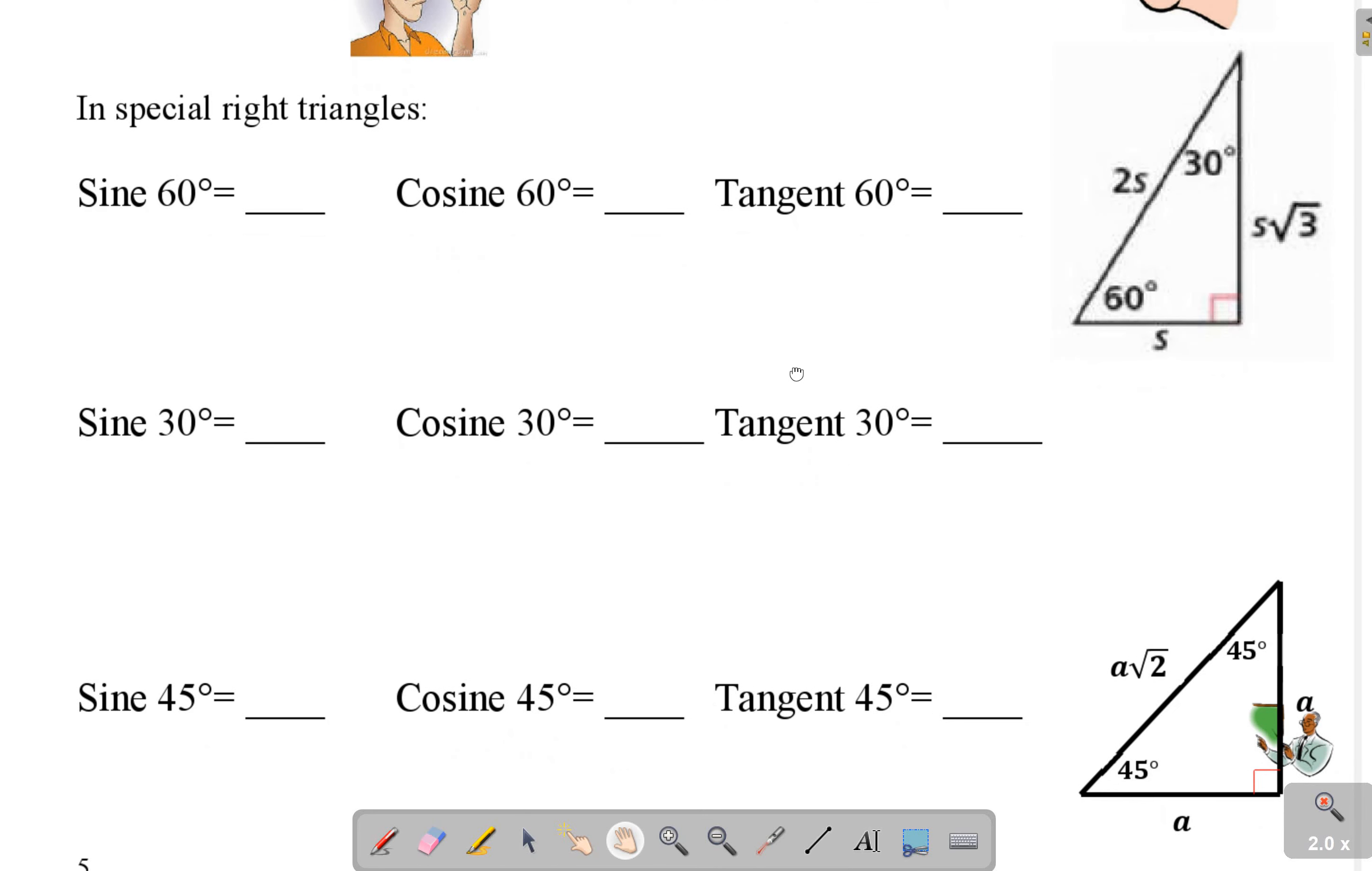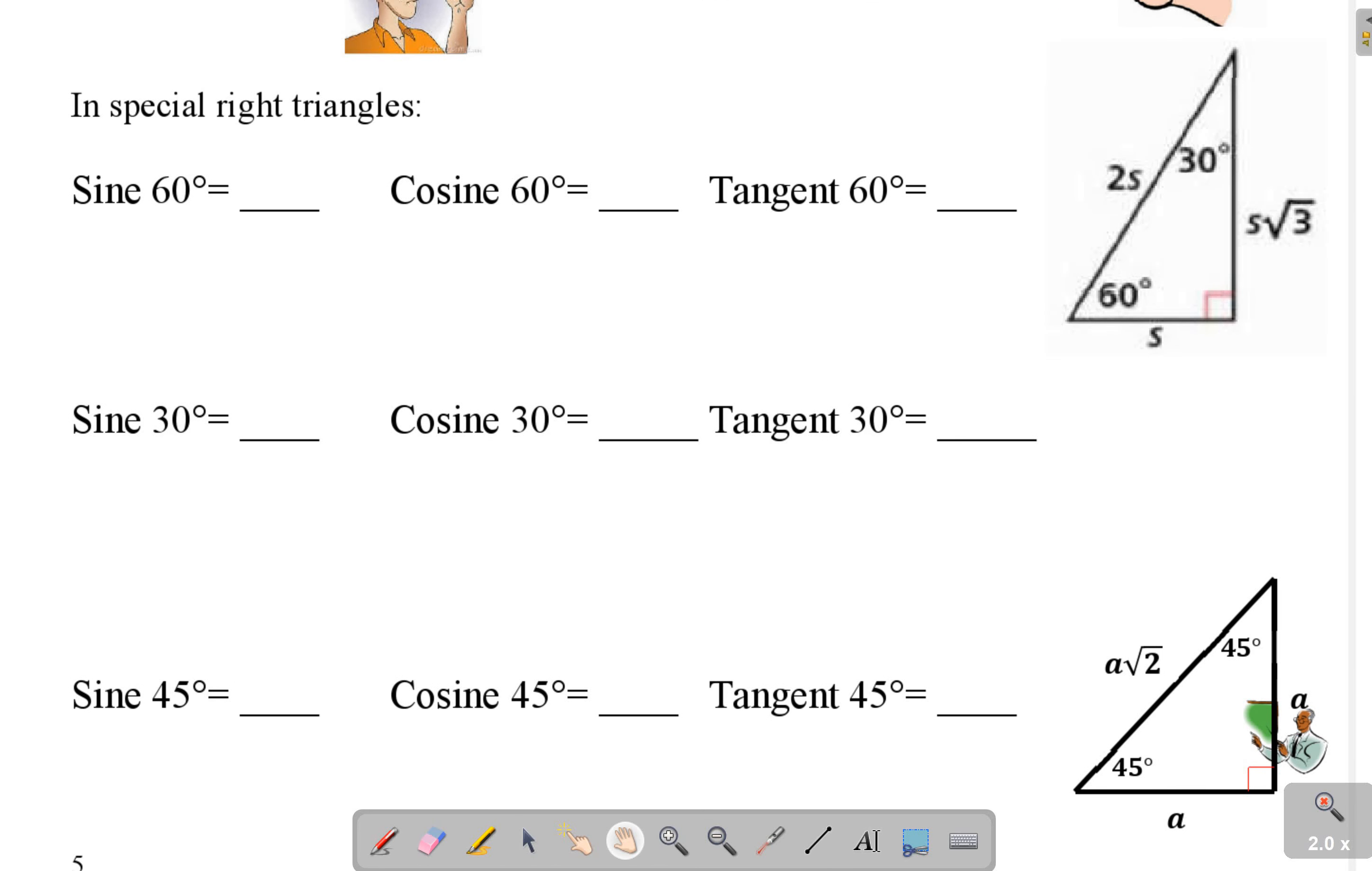Now first we're going to apply this to our special right triangles. Here we have a 30-60-90 triangle. Short leg, short leg root 3, short leg times 2. Then this is 1, root 3, and this is 2 times 1 of course.